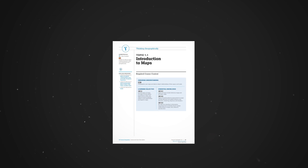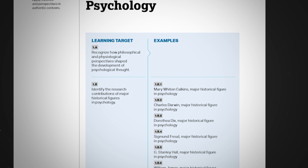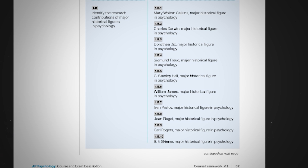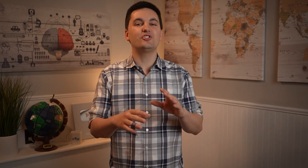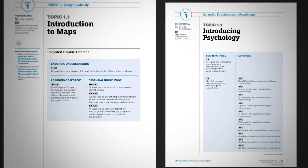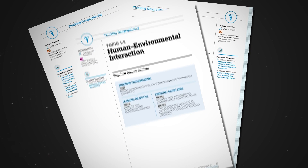For AP Human Geography, you'll also see learning objectives and essential knowledge. For AP Psychology, you'll see the learning target and examples. The learning objectives or learning targets can be used to practice each topic — make sure you can answer those questions, as you may see something similar on the AP test. The essential knowledge and examples are the content you need to know for the exam. So instead of rereading all your notes and textbook, focus on the content listed here — this is what the College Board will test you on. For AP Human Geography, also note the enduring understanding sections, which are repeating themes you can use to organize your study.